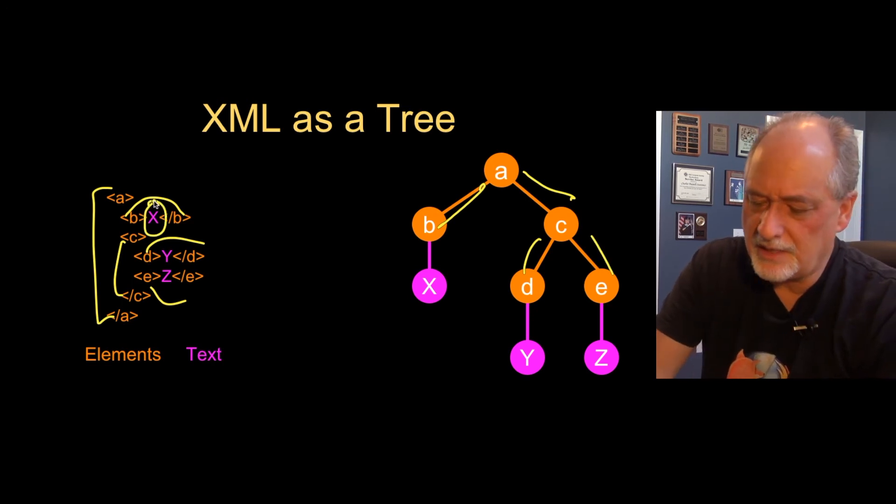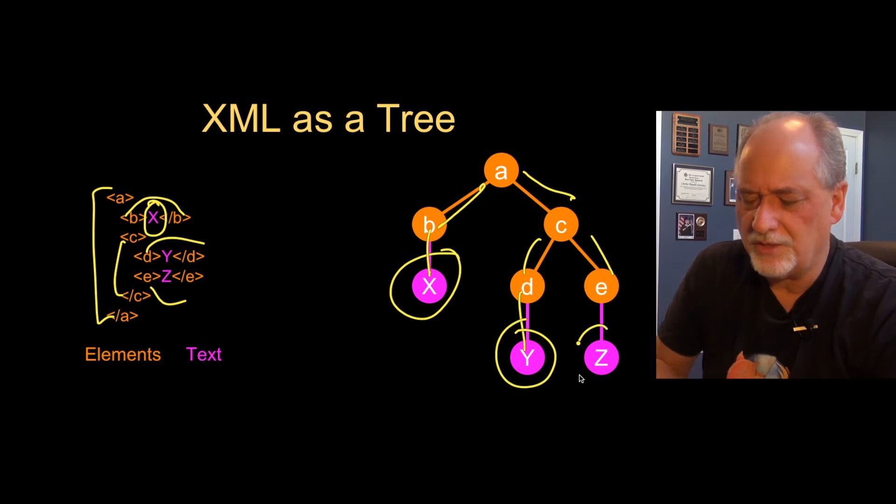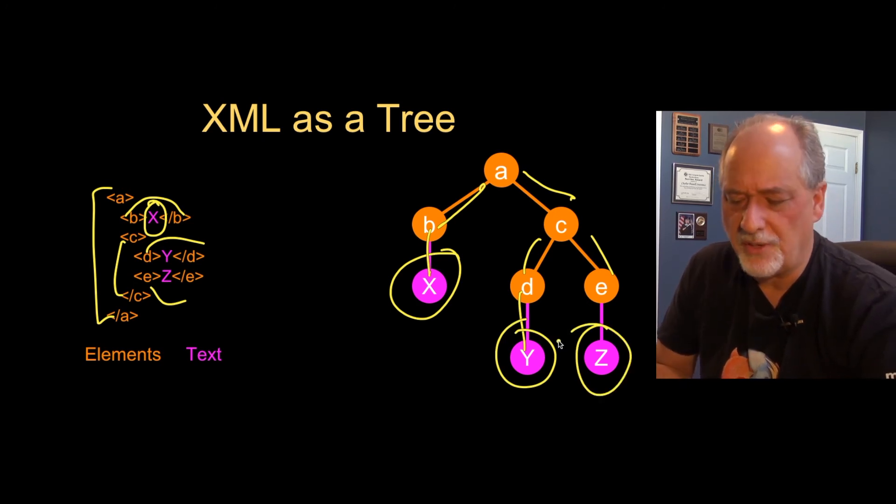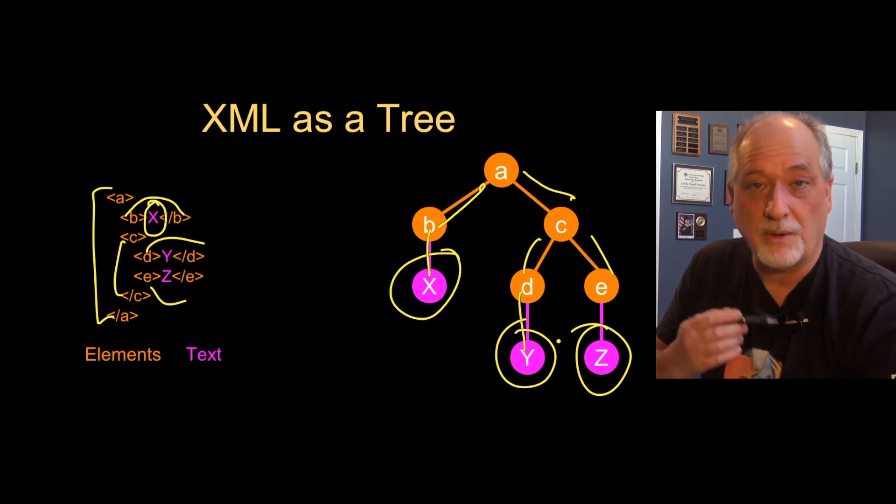The textual data we model as a child of each of those tags. You'll see in a bit why it's best to do that. So that is the way to think about this as a tree, to represent that XML as a tree.